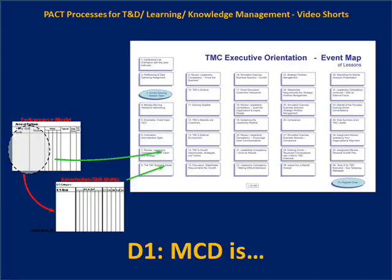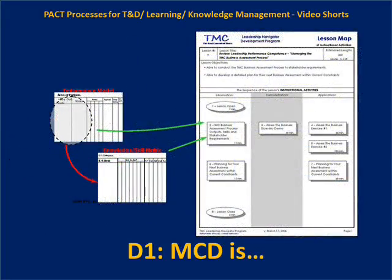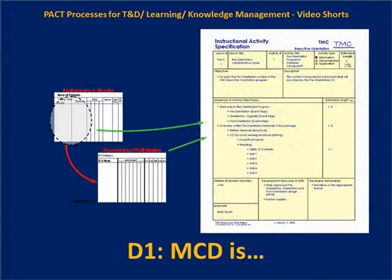MCD produces event maps — maps of the lessons of instruction. This is all fed by the performance data and the knowledge and skills data from the analysis efforts in MCD. The next level of design are the lesson maps, which are maps of instructional activities of three types: information, demonstration, and application. These instructional activities can exist at three different levels.